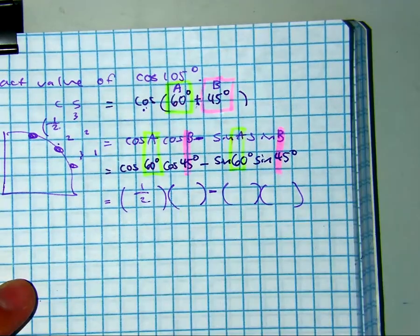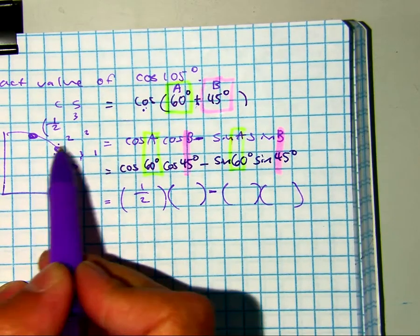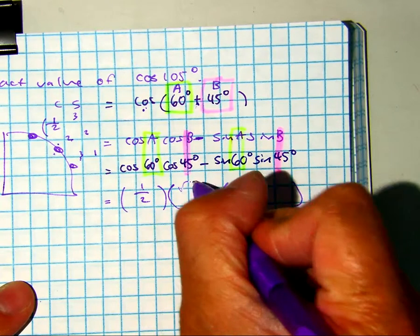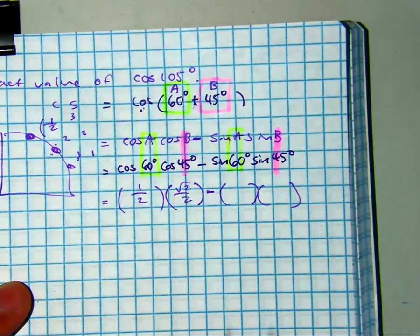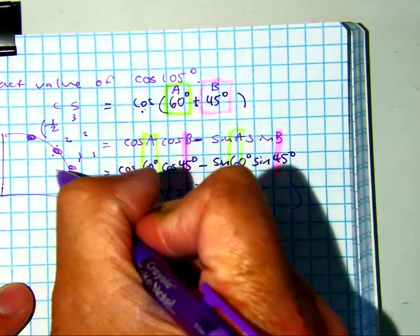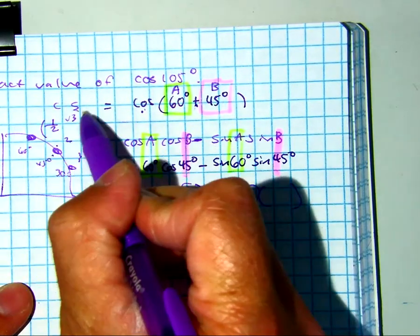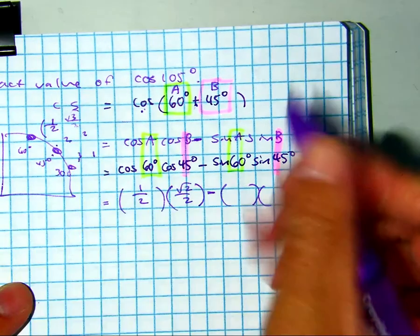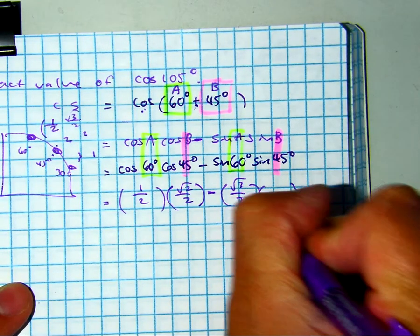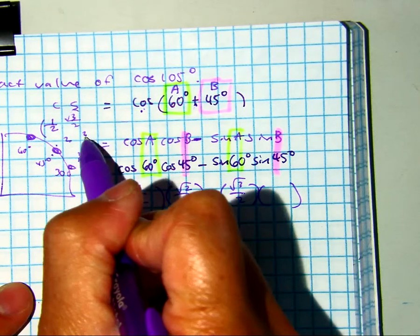Cosine of 45, radical 2 over 2. Sine of 60, that would be radical 3 over 2. And sine of 45, radical 2 over 2.